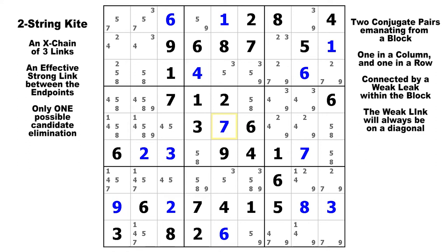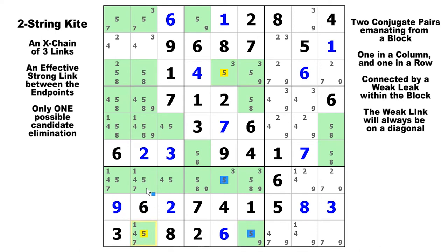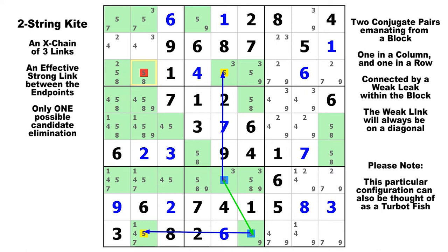In this real puzzle, let's take a look at candidate five. We have a strong link in column five going from here to here, and another strong link coming out of the same block going from here to here. The candidate five in row three, column two can see both of those yellow endpoints and can therefore be eliminated. Strong, weak, strong — you can call it an X-chain, turbofish, or two-string kite.